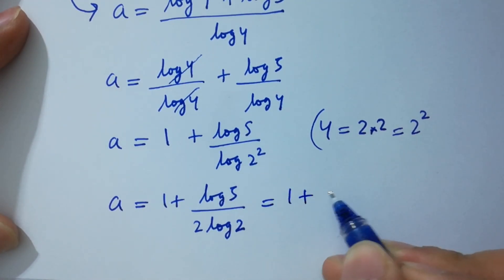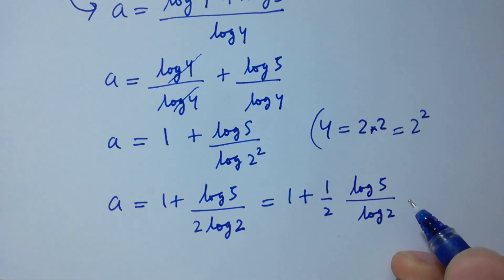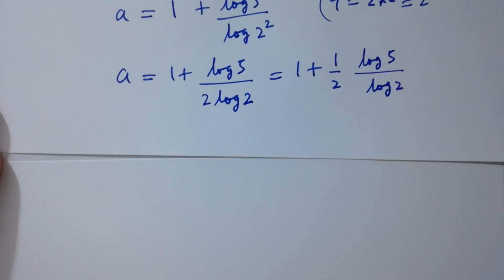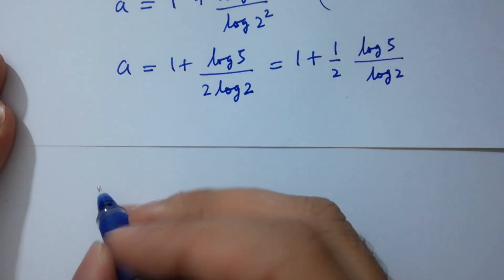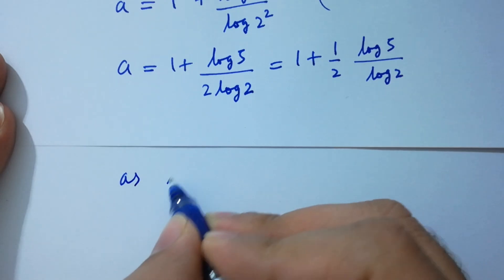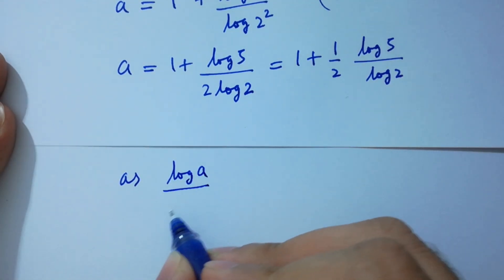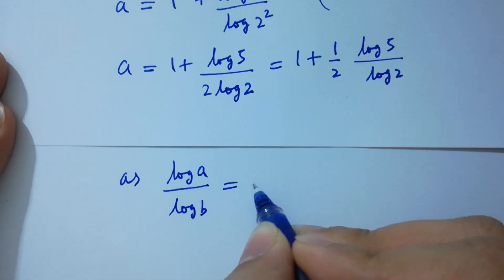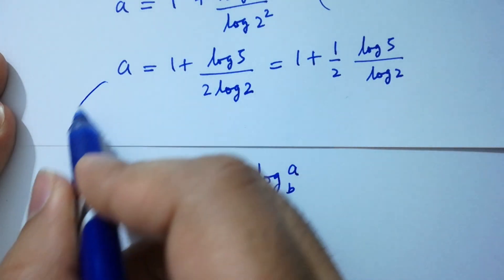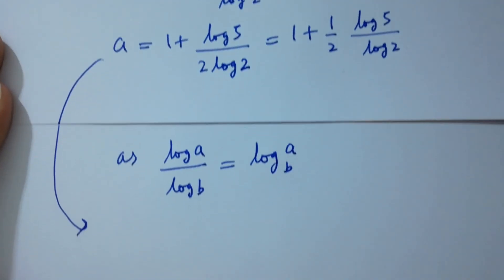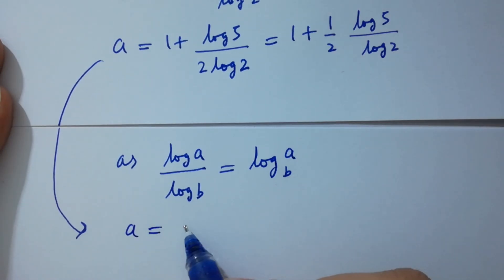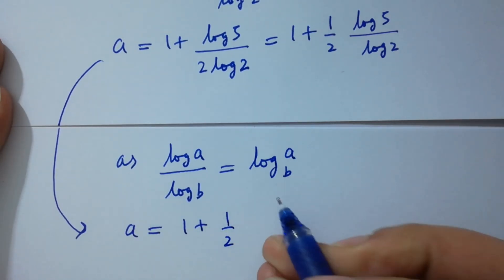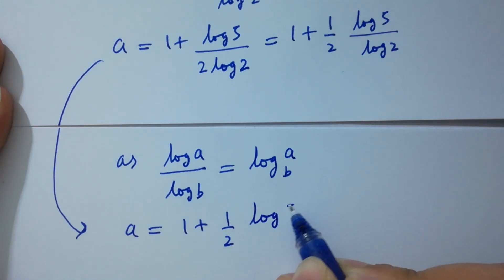Log 2 squared equals 2 log 2, so a equals 1 plus log 5 over 2 log 2. As log A over log B equals log A to the base B, A will be equal to 1 plus half log 5 to the base 2.